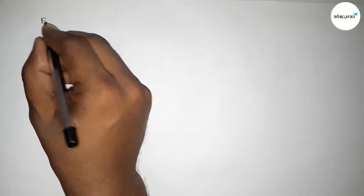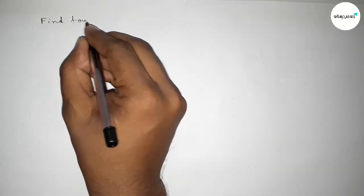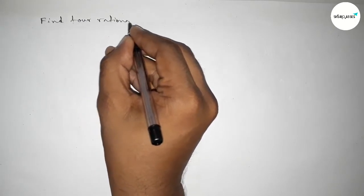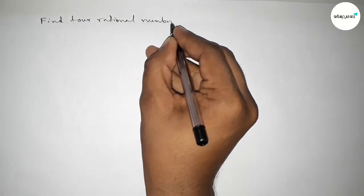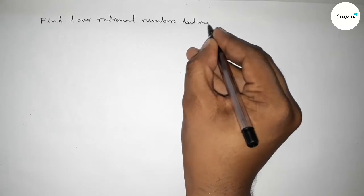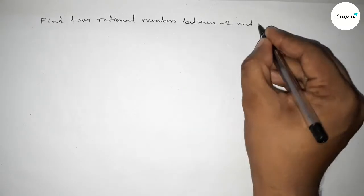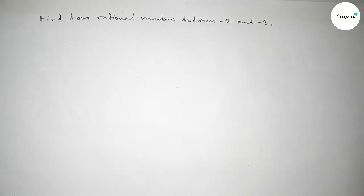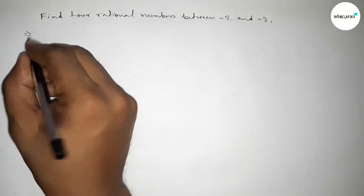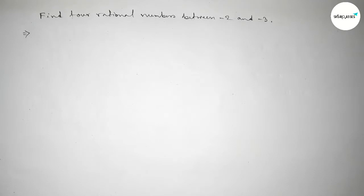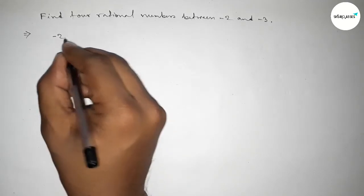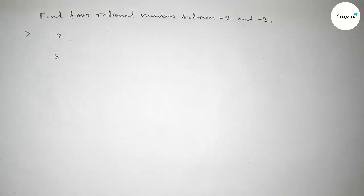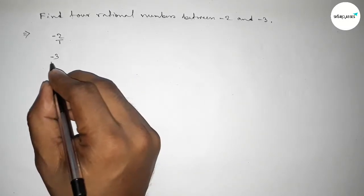Hi everyone, welcome to SI Share Classes. Today in this video we have to find out four rational numbers between minus 2 and minus 3. So let's start the video. First of all, we have to write down here the given numbers: minus 2 and minus 3. Now we can write minus 2 as minus 2 over 1 and minus 3 over 1.